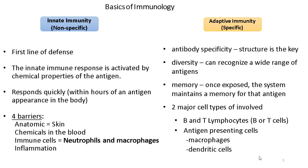The diversity of the adaptive immune system allows it to recognize a wide range of antigens. Vaccination is an important application — we expose the body to a deactivated form of an antigen, which enhances immunogenicity and remains dormant for a long period. Whenever a similar antigen enters the body, the immune system triggers and starts fighting. It has memory — once exposed, the system maintains a memory cell line for that antigen. Two major cell types involved are B-lymphocytes and T-lymphocytes, along with antigen-presenting cells.